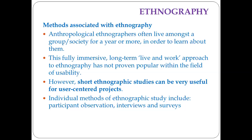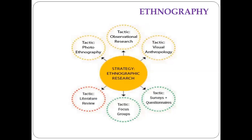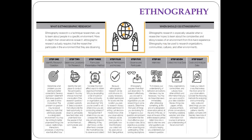Most cases these studies apply to participant observation, interviews, and surveys. In ethnographic research, many varieties of information can be gathered, including observational research — whatever you can see in front of you — as well as visual anthropology, surveys and questionnaires, focus groups, literature review, and photoethnography.